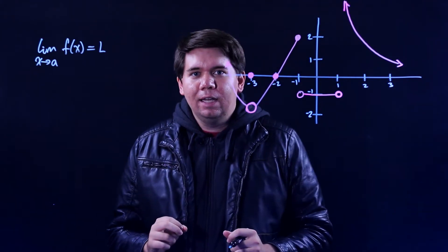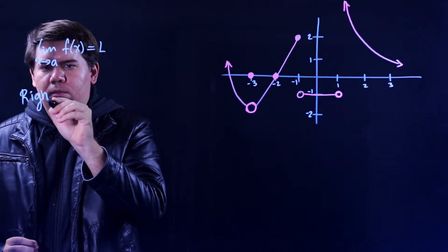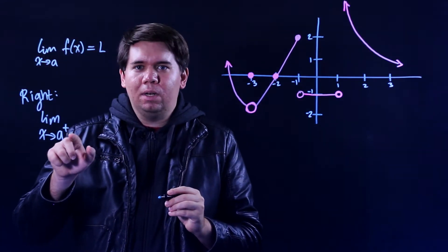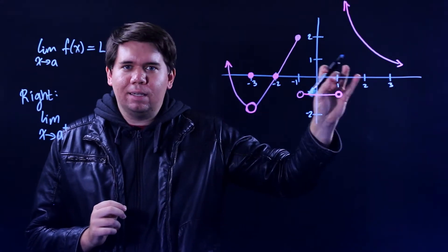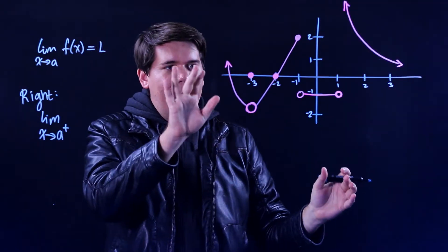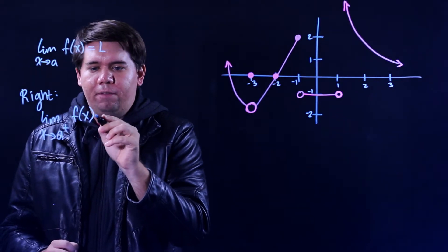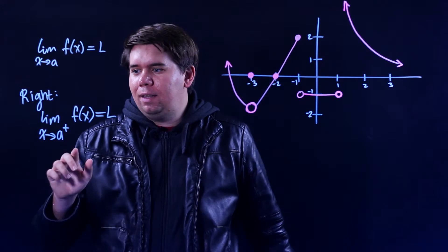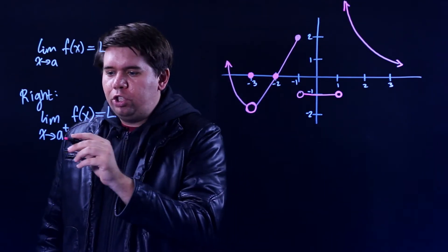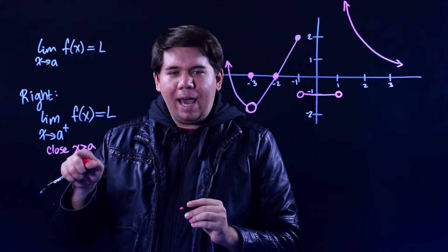There are two related concepts I want to talk about, and that's the idea of a right-handed and left-handed limit. A right-handed limit is expressed as the limit as x approaches a from the right, so I'll use plus to denote right. That's just because on our x-axis, when we move in the positive direction it is a plus — the right-hand side is positive, the left-hand side is negative. So the limit as x approaches a from the positive direction, or from the right, of f of x equals l means that as x gets closer to a, we restrict ourselves to x values that are close to a but a little bit bigger.